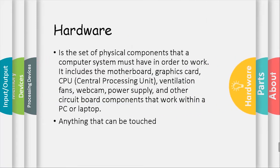Hardware is the set of physical components that a computer system must have in order to work. It includes the motherboard, graphics card, CPU or the central processing unit, ventilation fans, webcam, power supply, and other circuit board components that work within a PC or a laptop — anything that can be touched.